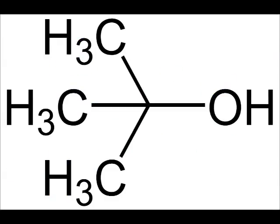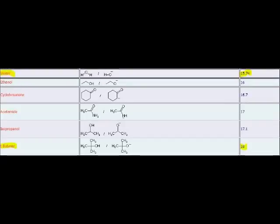For example, tert-butyl alcohol is a weak acid, even weaker than water. Acids are described by pKa, and the higher the pKa, the weaker the acid. Tert-butyl alcohol has a pKa of 18 compared with about 15.7 for water. pKa is logarithmic, so this makes tert-butyl alcohol about 200 times less acidic than water.